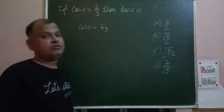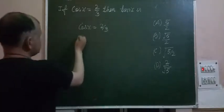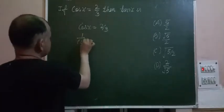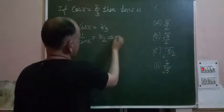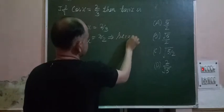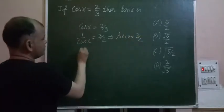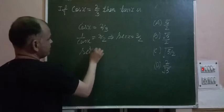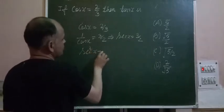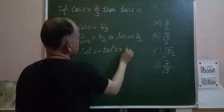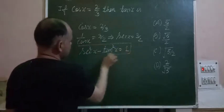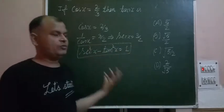you can reverse it or take its inverse. So 1 upon cos x equals 3 by 2, and 1 upon cos x is sec x, so sec x equals 3 by 2. And you know that relation sec²x minus tan²x equals 1. You know this relationship of trigonometry ratios.